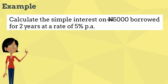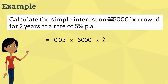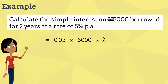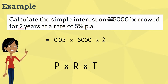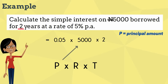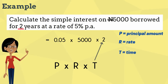What if we were to calculate the simple interest on this 5,000 Naira for two years? We would have to multiply our answer by two. That leads us to the formula for calculating simple interest, which is P times R times T — where P stands for the principal amount, R stands for the rate as in the percentage, and T stands for the time.